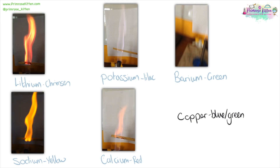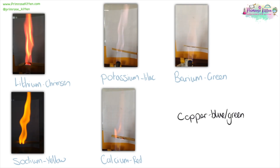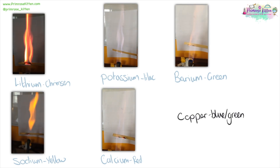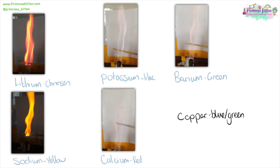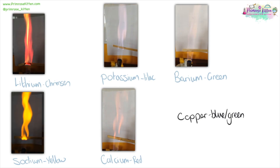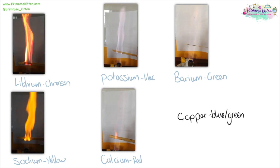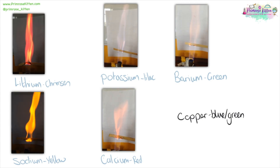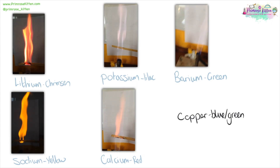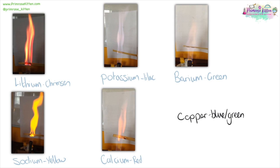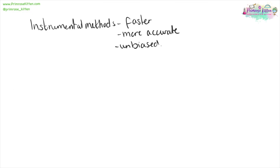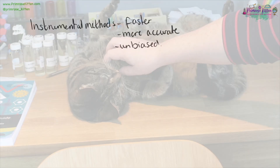I love flame tests — they are so, so pretty. You need to know that lithium burns with a crimson flame, sodium with a yellow flame, potassium with a lilac flame, calcium with a red flame, barium with a green flame, and copper burns with a blue-green flame. In some cases, doing tests in class might not be as good as using an instrumental method. Instrumental methods can be faster, more accurate, and they are unbiased.